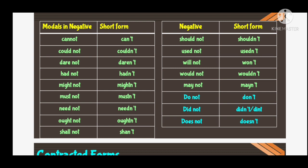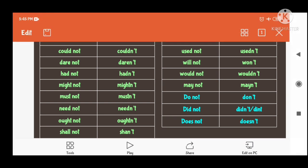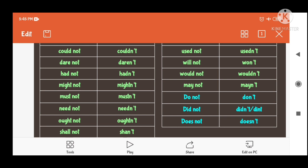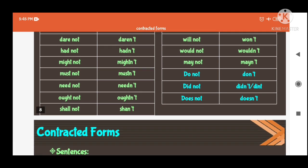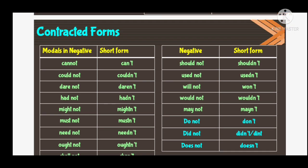In the next slide, we have the negative forms and their short forms. 'Cannot' — contracted form is 'can't'. 'Could not' — short form is 'couldn't'. 'Dare not' — 'daren't'. 'Had not' — 'hadn't'. 'Might not' — 'mightn't'. 'Must not' — 'mustn't'. 'Need not' — 'needn't'. 'Ought not' — 'oughtn't'. 'Shall not' — 'shan't'. 'Should not' — 'shouldn't'. 'Used not' — 'usedn't'. 'Will not' — 'won't'. 'Would not' — 'wouldn't'. 'May not' — 'mayn't'. 'Do not' — 'don't'. 'Did not' — 'didn't'. 'Does not' — 'doesn't'.